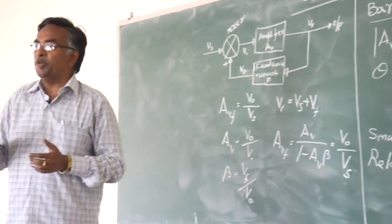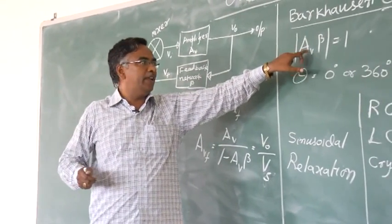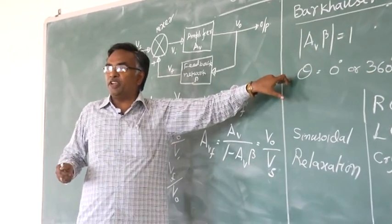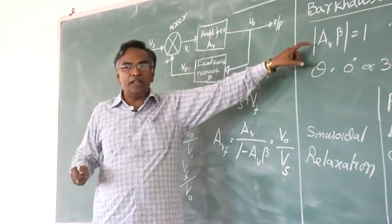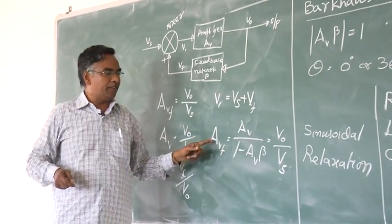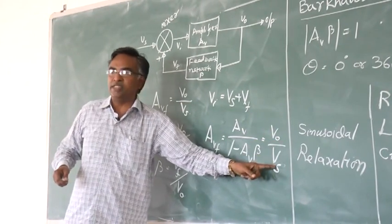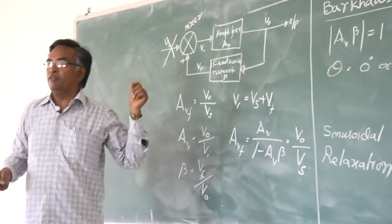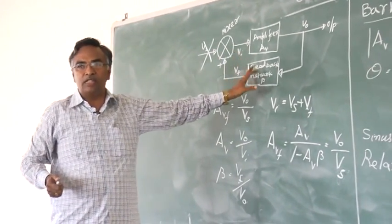There are two conditions for producing oscillations. Number one: loop gain must be equal to unity — that is, AV times beta must equal 1. Number two: the overall phase shift of the network must be equal to 0 degrees or 360 degrees. Since loop gain equals unity, putting AV·beta equal to unity makes AVF equal to infinity. Since AVF equals infinity, V_out by V_s equals infinity, meaning V_s equals 0. That is the reason we do not apply any external input signal to these oscillators.